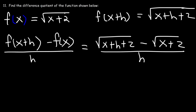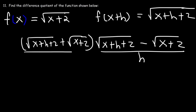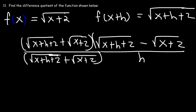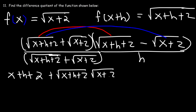We multiply the fraction by the conjugate of the numerator. The conjugate is √(x+h+2) + √(x+2). Whatever you do to the top of a fraction you must also do to the bottom. FOILing the numerator: √(x+h+2) times itself gives (x+h+2), and the cross terms with opposite signs cancel, leaving −(x+2) on the end.